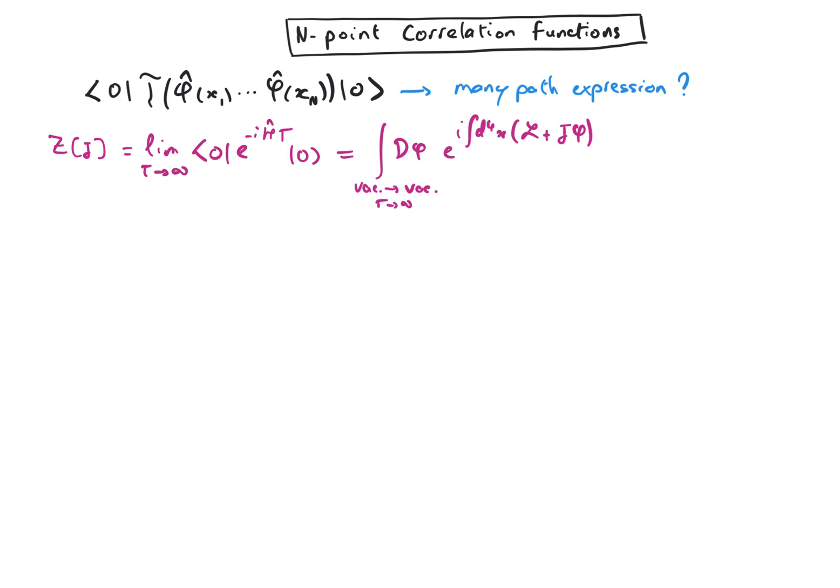So we can similarly connect the endpoint correlation function in the many-path approach. So we are summing over the path. We have the phase, exponential I times the action. Now we don't have the source, because there is no source in the expression for the endpoint correlation function.